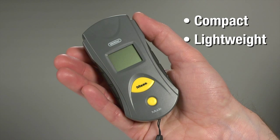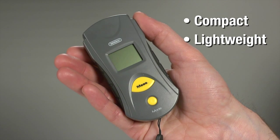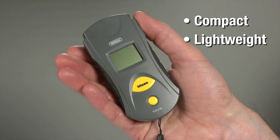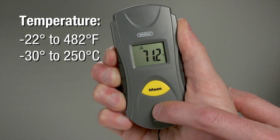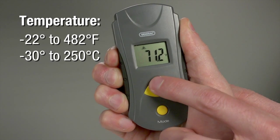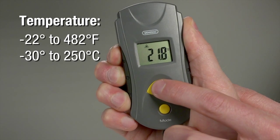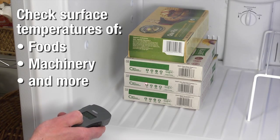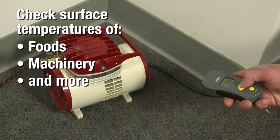Don't let the small size and lightweight fool you. The IRT105 has powerful capabilities. Measure temperatures from negative 22 to 482 degrees Fahrenheit or measure in Celsius. Check surface temperatures of foods, machinery, and much more.